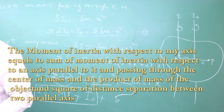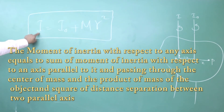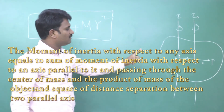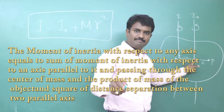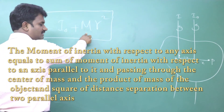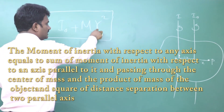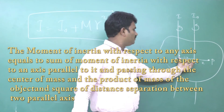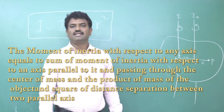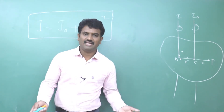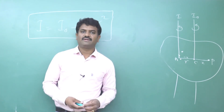To state it clearly: the moment of inertia with respect to any axis is equal to the sum of the moment of inertia with respect to a parallel axis passing through the center of mass, and the product of the mass of the object and the square of the distance of separation between the two parallel axes. That is the statement of the parallel axis theorem.